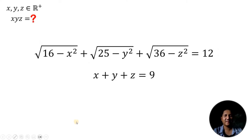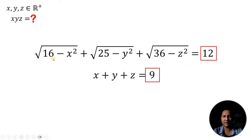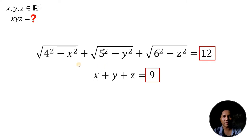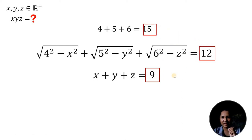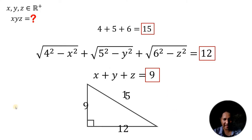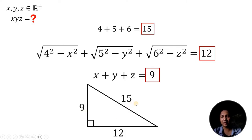First thing we need to do here is to observe the given. Take note of these two numbers: 9 and 12. Also, 16 is 4 squared, 25 is 5 squared, and 36 is 6 squared. And 4 plus 5 plus 6 is simply equivalent to 15. Take note that 9, 12, and 15 can be the sides of a right triangle — two legs equivalent to 9 and 12, and the hypotenuse must be equal to 15.